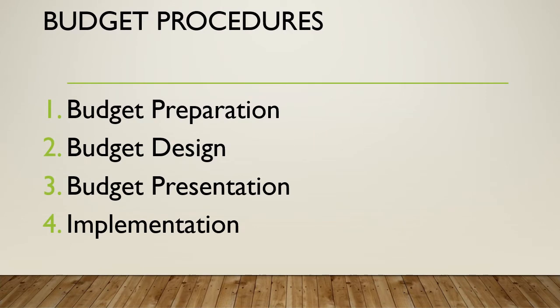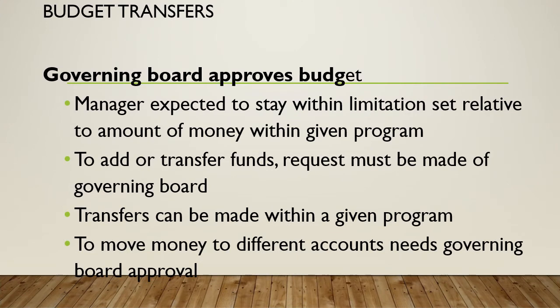In general, budget procedures are broken down into four parts: budget preparation, gathering resources to begin the process; budget design, choosing zero-based, performance-based, or whatever type applies; budget presentation, where you get approval from your supervisor or board of directors; and implementation, which is the facilitation of expenditures and revenue collection related to the budget. The manager is expected to stay within whatever limitation is in place for each given program. To add or transfer funds out of a program, they must make a formal request, as moving money to different accounts or programs requires specific approval.